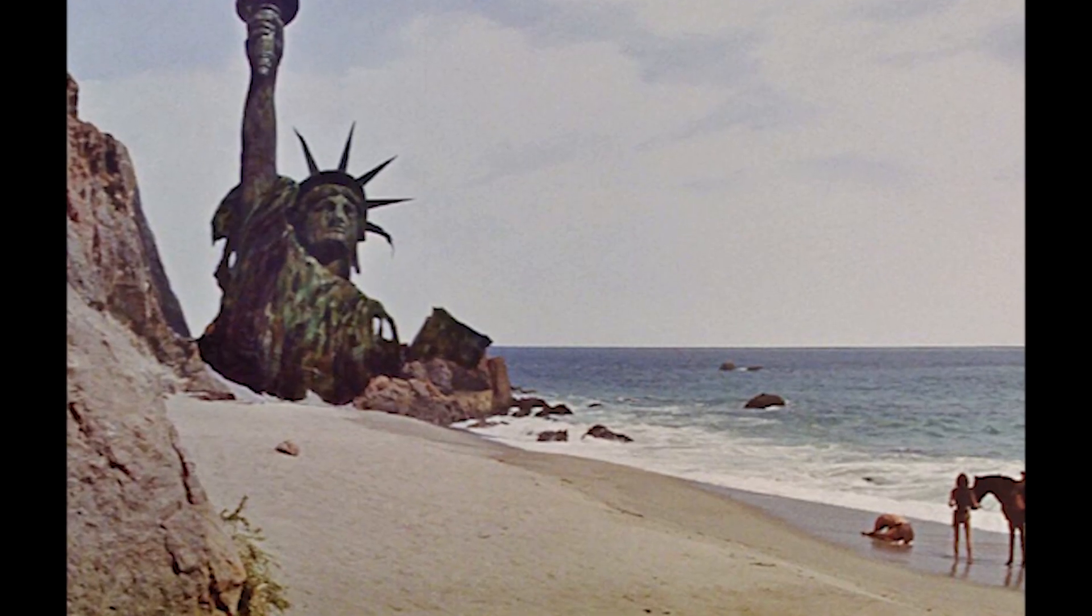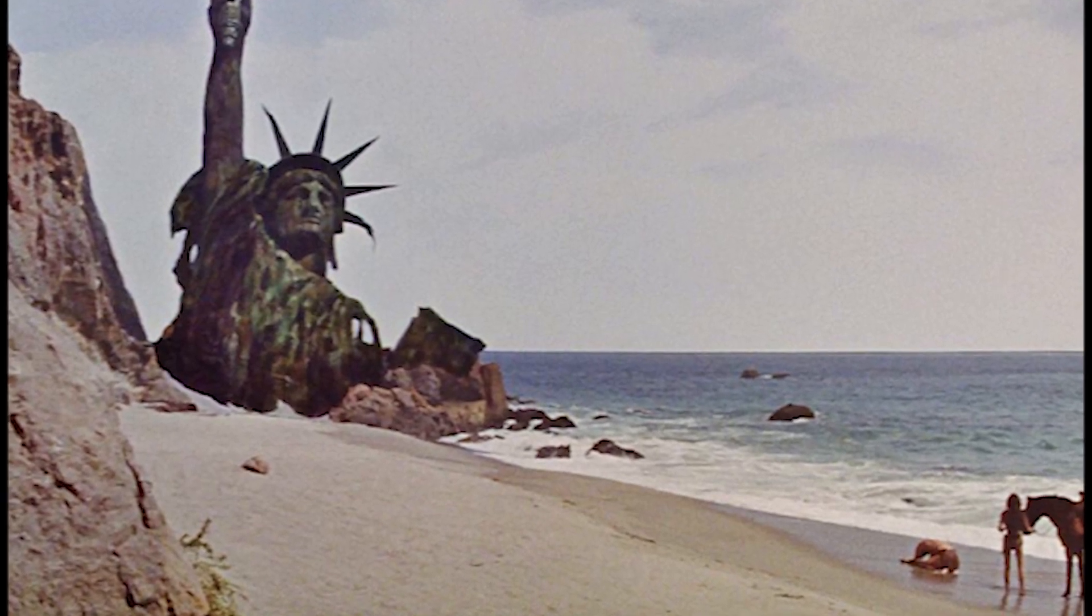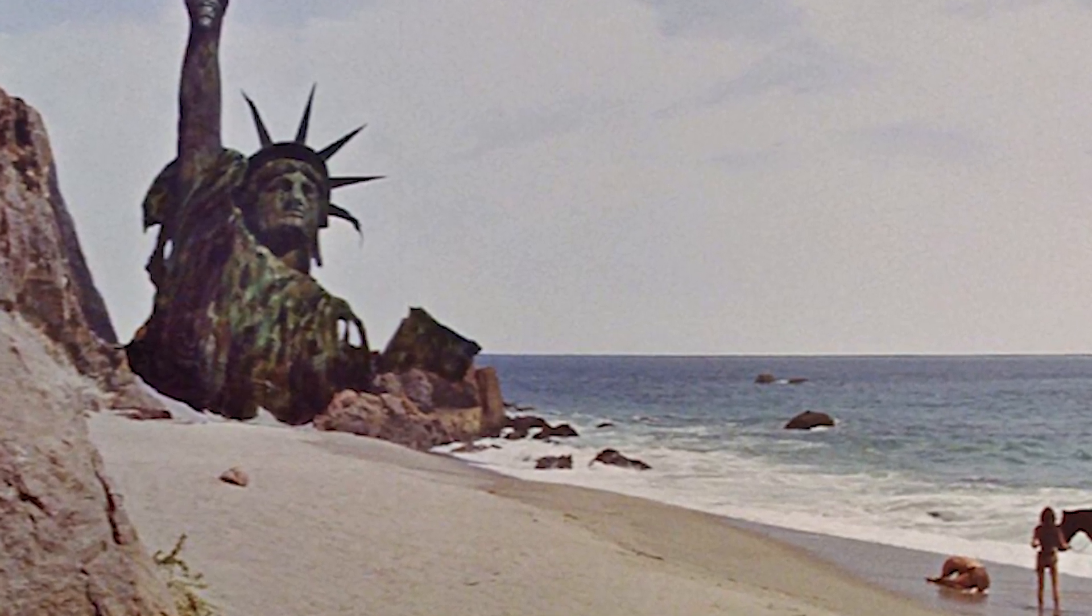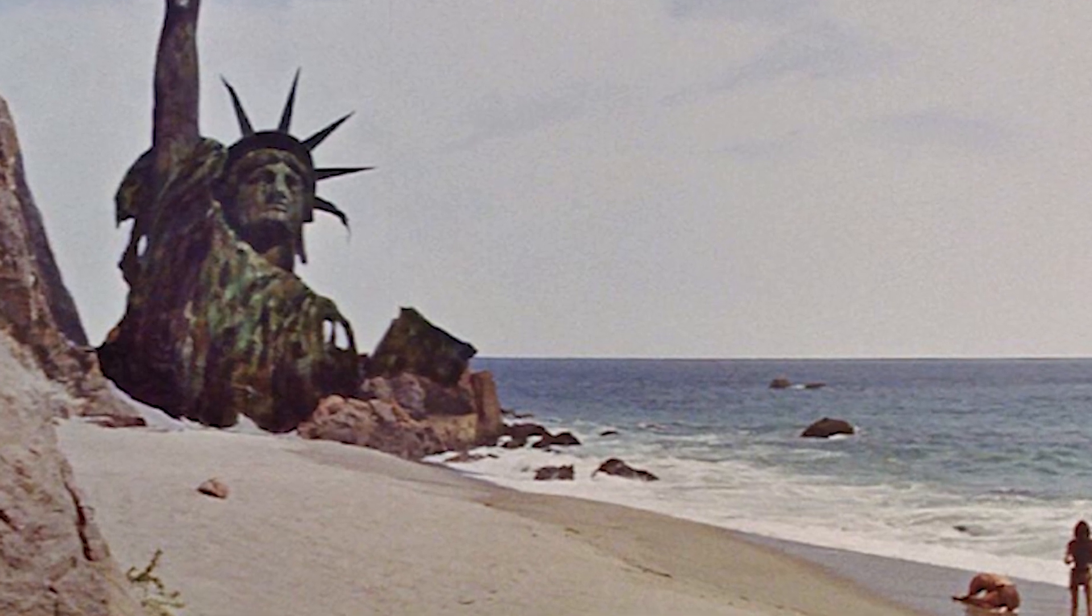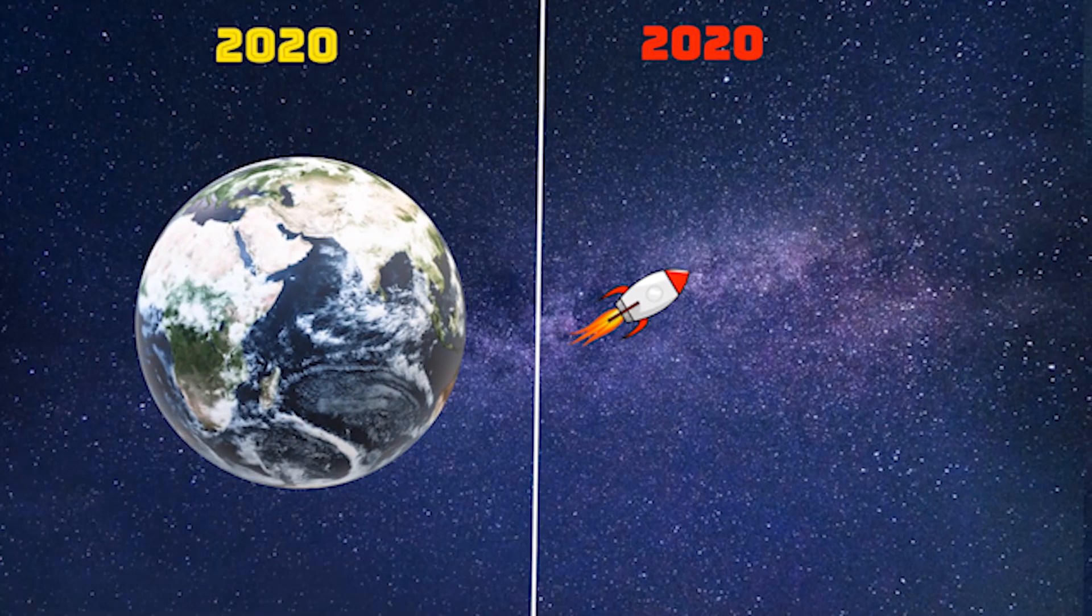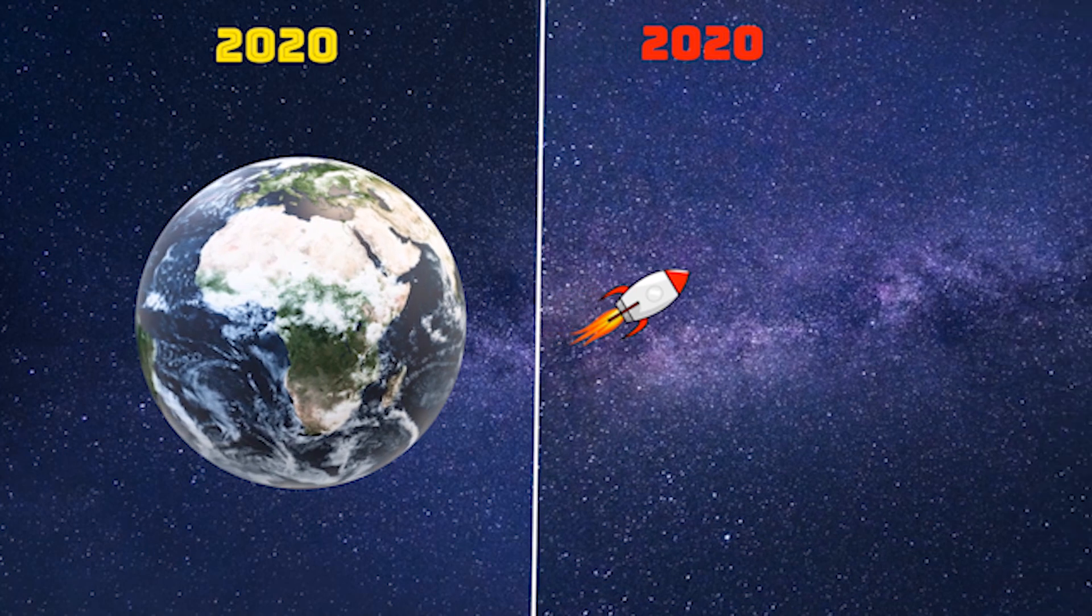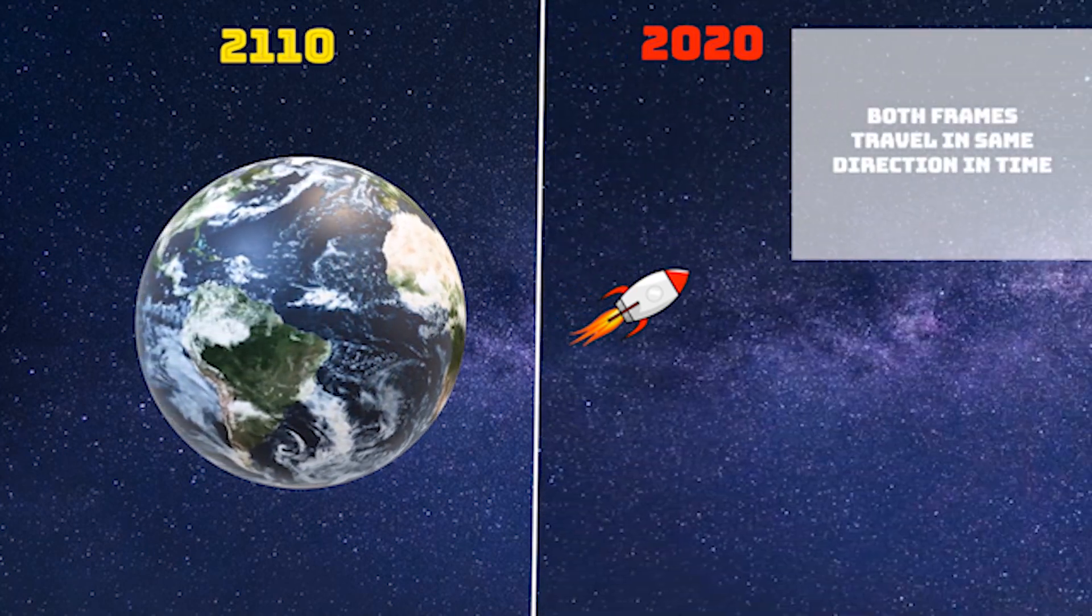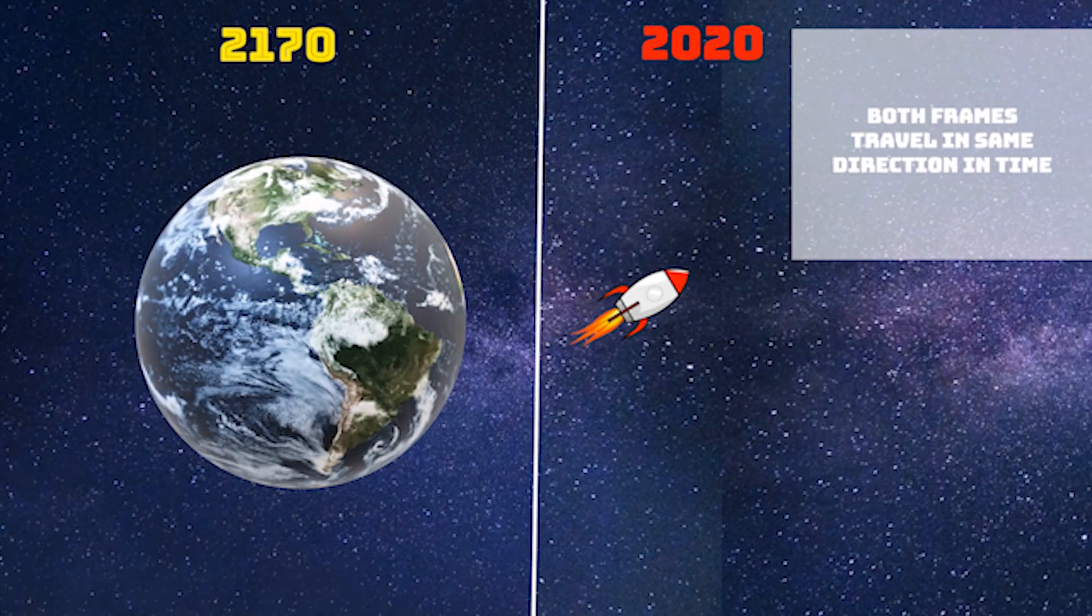This was the primary concept behind the movie Planets of the Apes, where the characters used a spaceship and eventually ended up on future Earth, which was ruled by Apes. But in true sense, this is not time travel, because in both cases, the reference frames travel in the same direction in time, but with different rates.